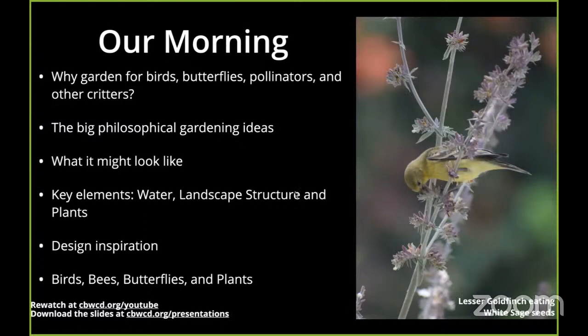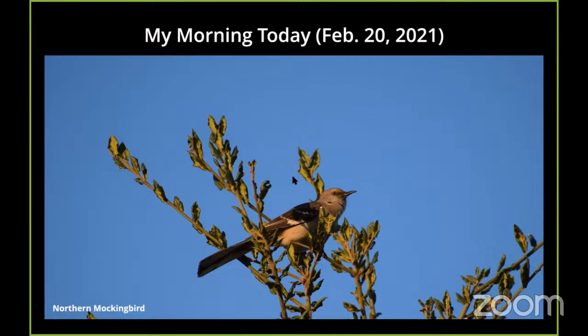To get started, let me tell you a little bit about my morning today. When I do this class, I always like to spend a couple of minutes before it just wandering out into my garden with my camera, because there's always something interesting going on in my yard because I do habitat gardening. I have a small front yard and a large backyard. The front yard is all California native plants, and the backyard is mostly California native plants, but also quite a number of fruit trees and a decent amount of vegetable gardening space.